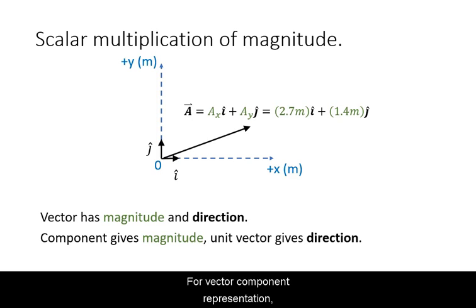For vector component representation, now you can separate out the magnitude of each component from their direction. The letters i and j are commonly used to represent the direction in the x and y direction respectively.